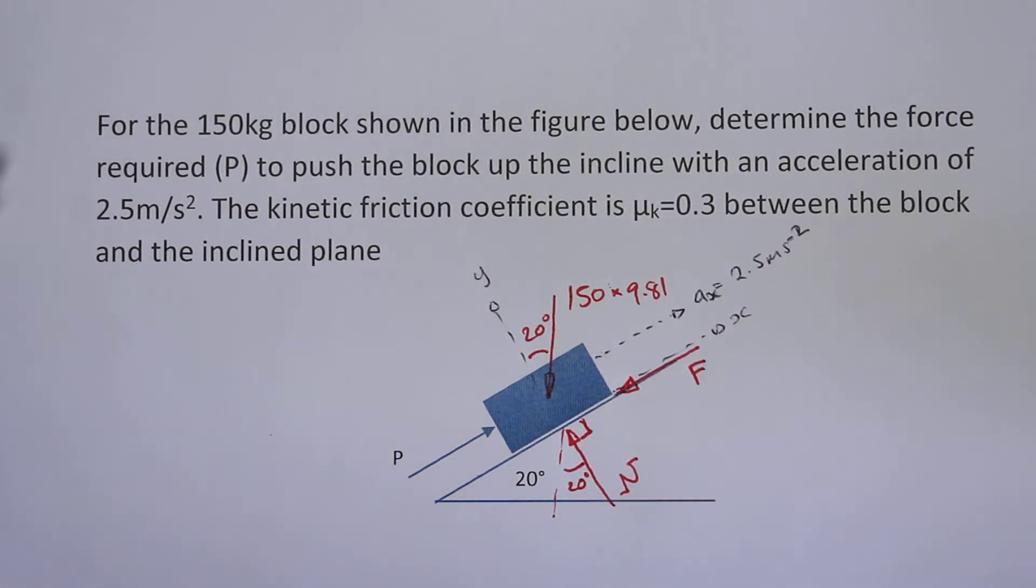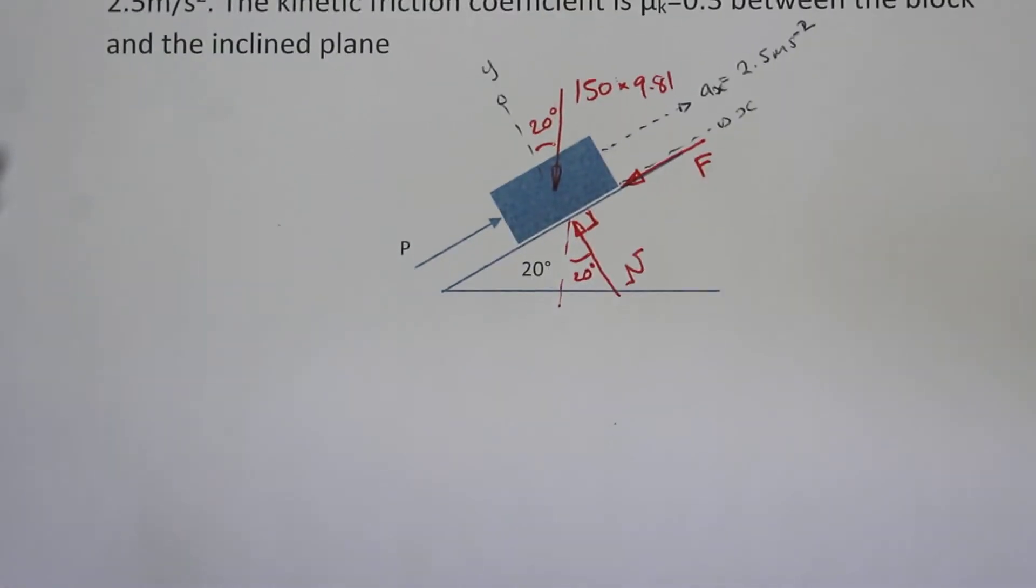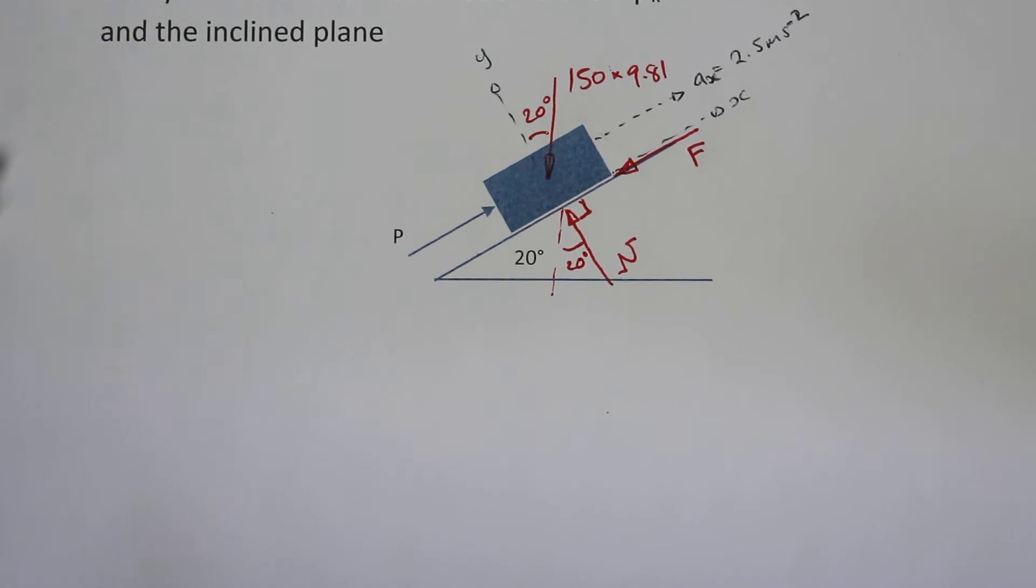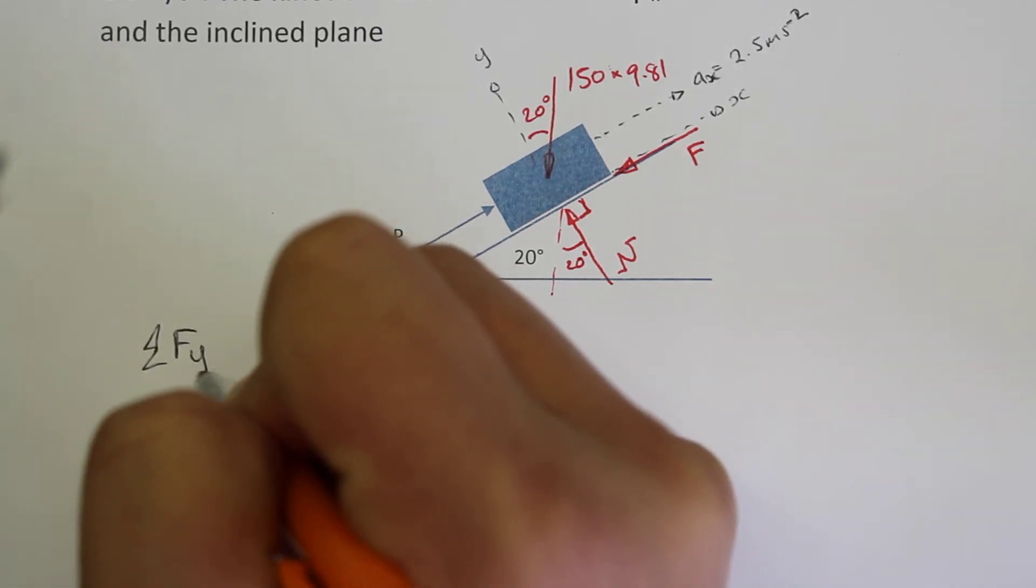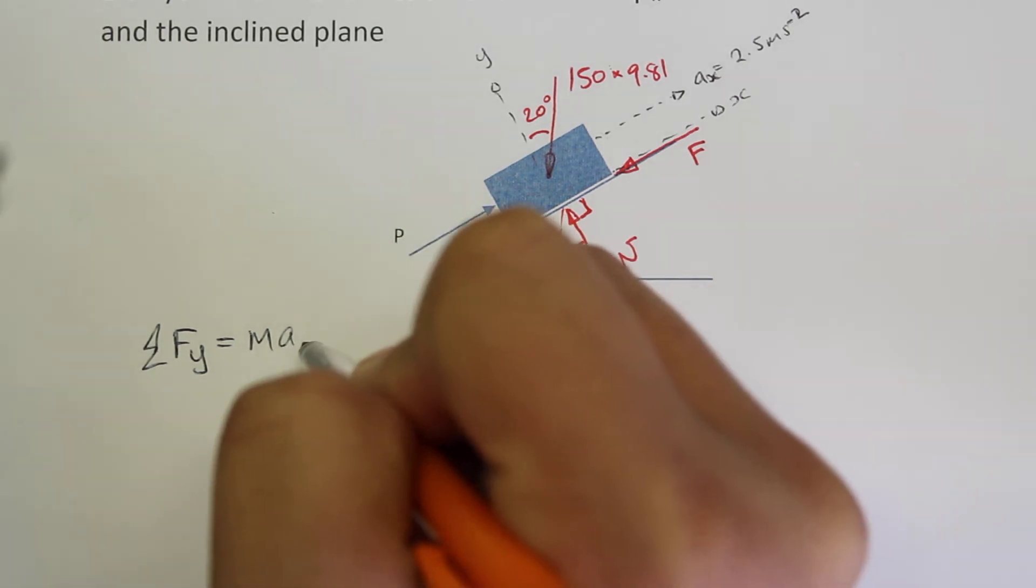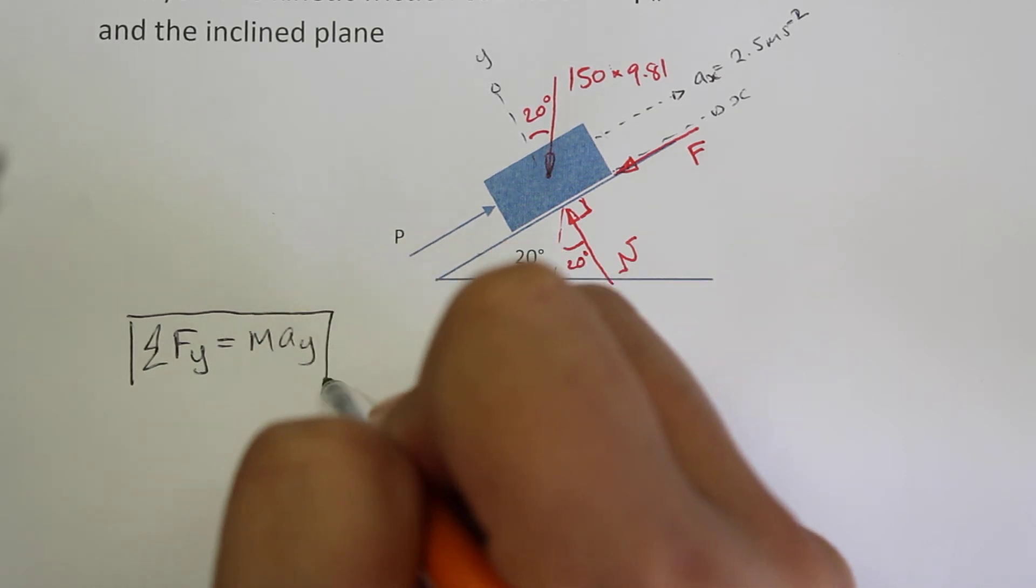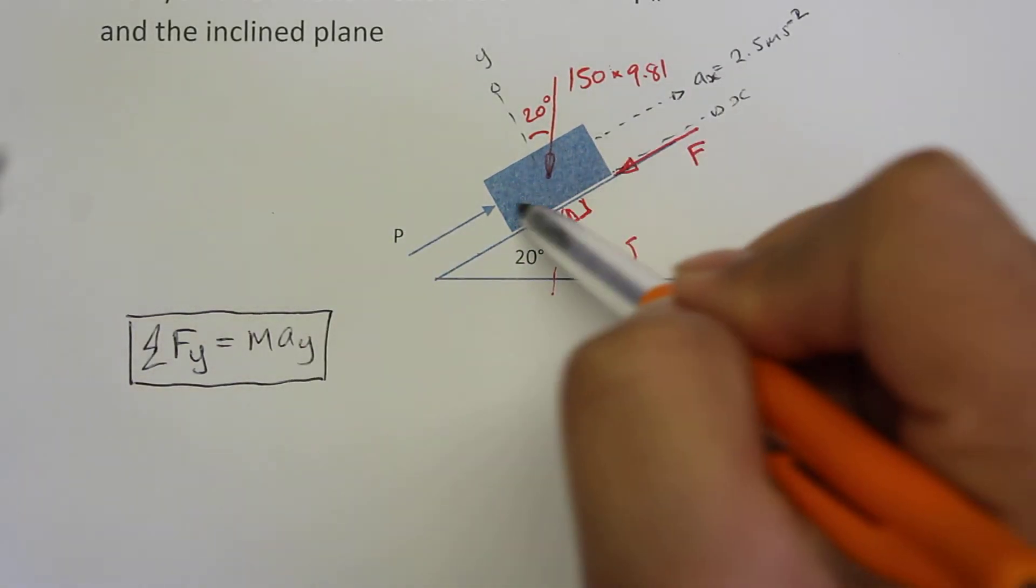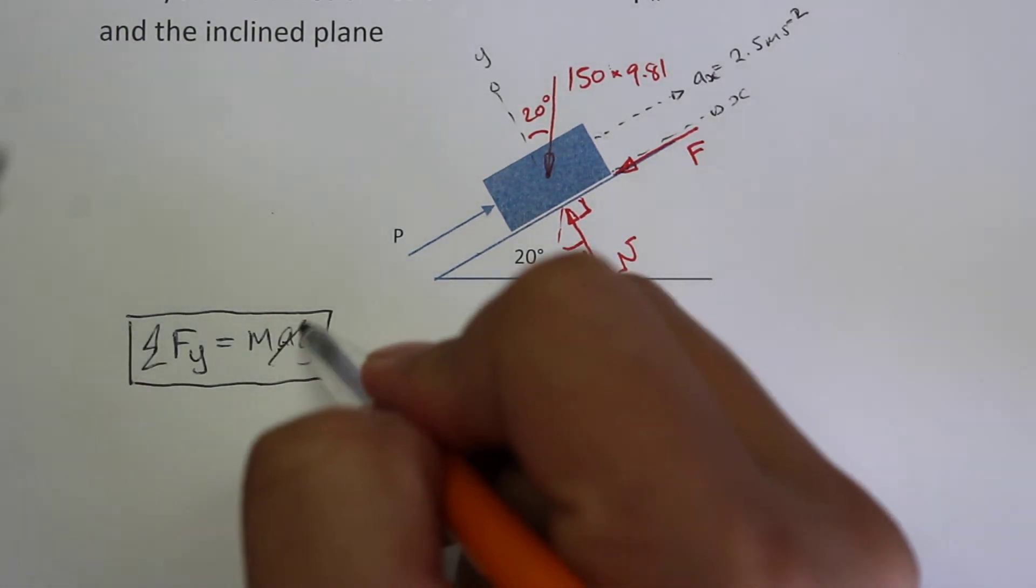So the next stage here is to do the equations of equilibrium. We know that the forces in the y-direction should balance, so we'll start with that. The sum of forces in the y-direction should be equal to the mass times the acceleration of the body in the y-direction. If the block is sliding in the x-direction, there is no acceleration in the y, so this value here is equal to zero.